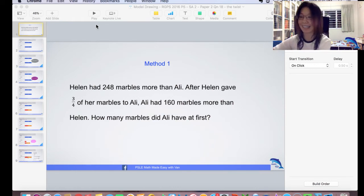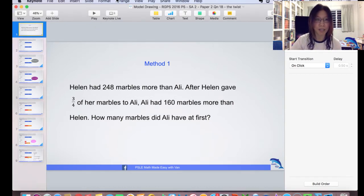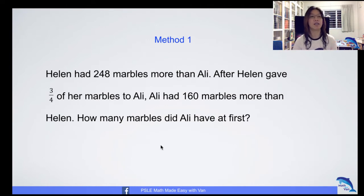So here we go to this question. Very similar to what I had earlier on, but let's take a look. Again the same Helen and Ali, but I made a slight tweak to this whereby in the end Ali would have 160 marbles more than Helen. Helen had 248 marbles more than Ali, the same as previous. After Helen gave three-quarter of her marbles to Ali, Ali had 160 marbles more than Helen. How many marbles did Ali have at first?